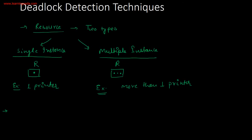For today's topic we are going to start from deadlock detection techniques. As we know, in our operating system resources are of two types: first one is single instance and the other one is multiple instance. Single instance means your resource has only one instance, like your system has only one printer. In multiple instance, the resource is a printer but having more than one instance, like more than one printers.